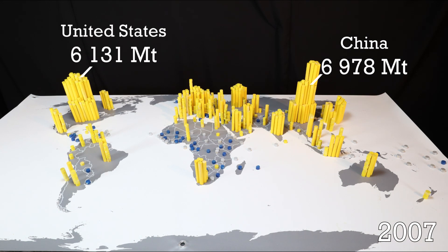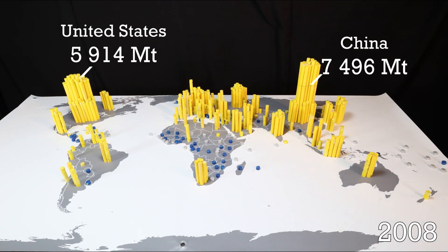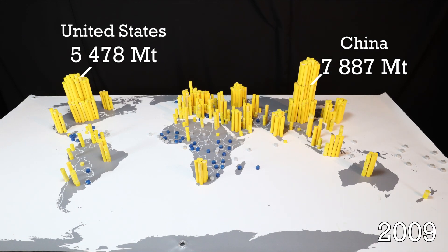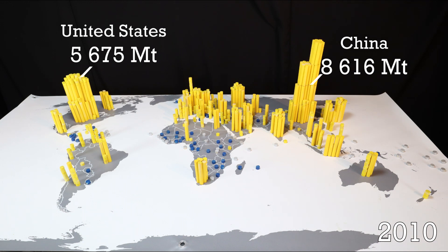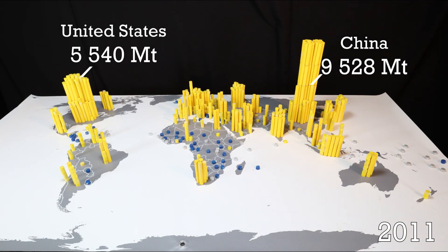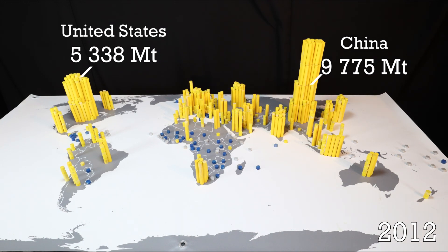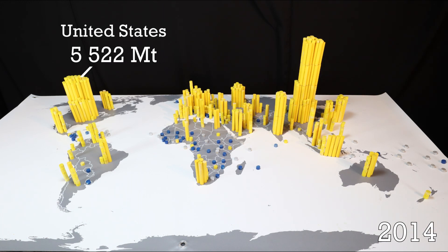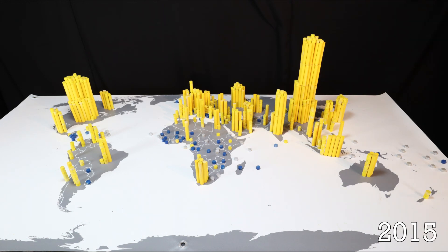China stands at 3.5 billion tons by the turn of the millennium, but during the first decade of the 2000s, China's emissions close to threefold. In 2014, China is just an inch away from 10 billion tons of annual emissions of carbon dioxide. At the same time, India grows past Russia, and US emissions slowly decrease to just over 5 billion tons.